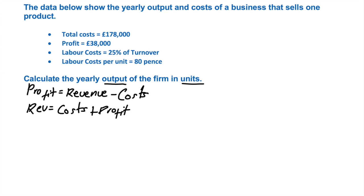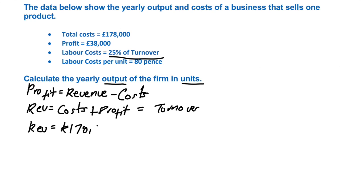Revenue, we know, is the same thing as turnover. And that's going to help us with that 25% of turnover that it mentions. So the revenue clearly here must be £178,000 plus £38,000.